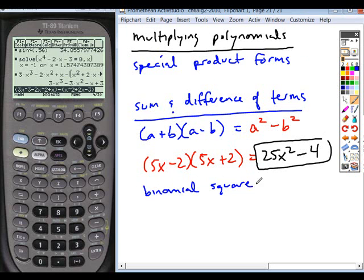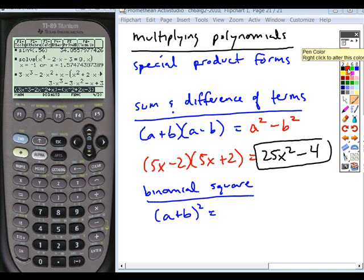Another special product form that you should be aware of is a binomial square. In the binomial square, if you take a sum of terms and you square it, the pattern for this product will be the first term squared plus twice the product of the terms plus the last term squared.